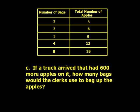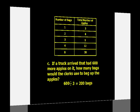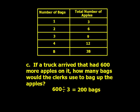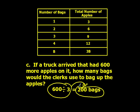Letter C: if a truck arrived that had 600 more apples on it, how many bags would the clerks use to bag up the apples? We had 600 apples; we know there are three in a bag, so we end up with an answer of 200 bags.